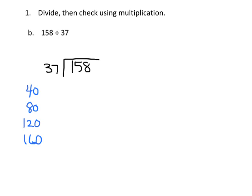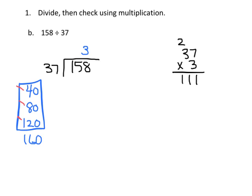At that point it looks like our quotient is going to be 3, because if I go farther than that I'm going to go past 158. So I'm going to put 3 as my quotient. Over here on scratch paper I need to figure out exactly what 37 times 3 is. 3 times 7 is 21, carry the 2. 3 times 3 is 9 plus 2 is 11, so we have 111.